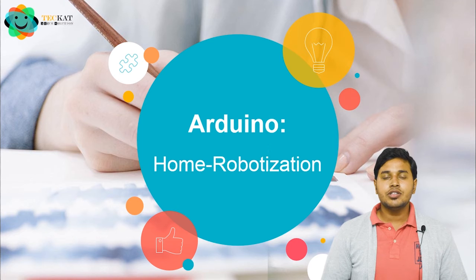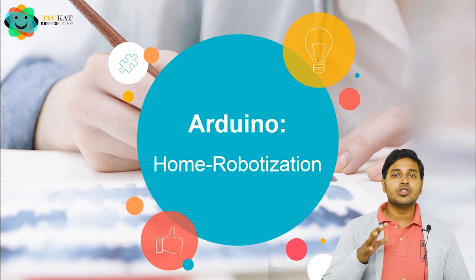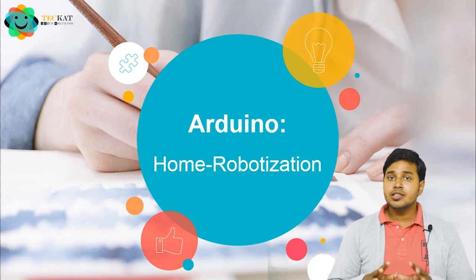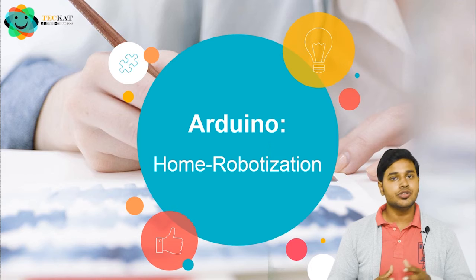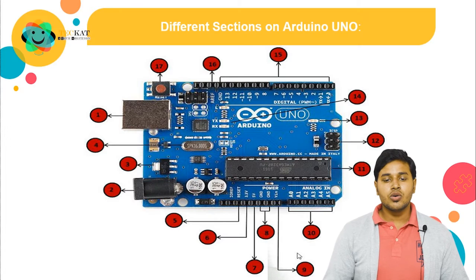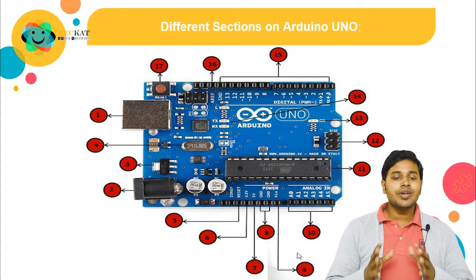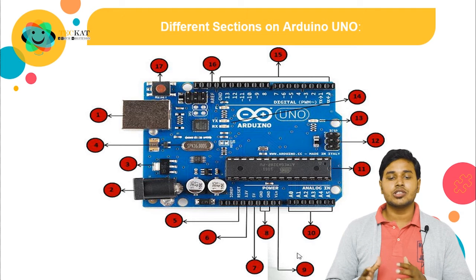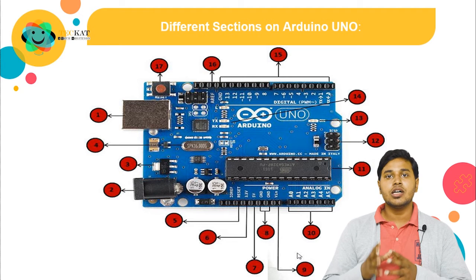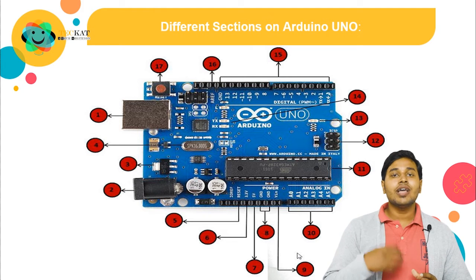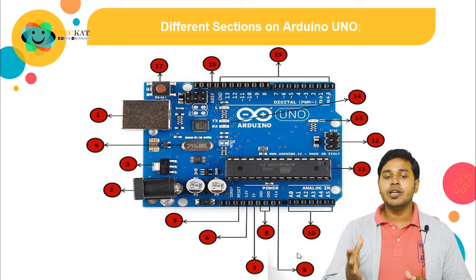Hello, so now we have the end of top module 1. In this module we're going to briefly describe the different sections of Arduino Uno. As you can see in the picture, there are different sections numbered 1 to 17, and we're going to divide and explain each topic briefly.